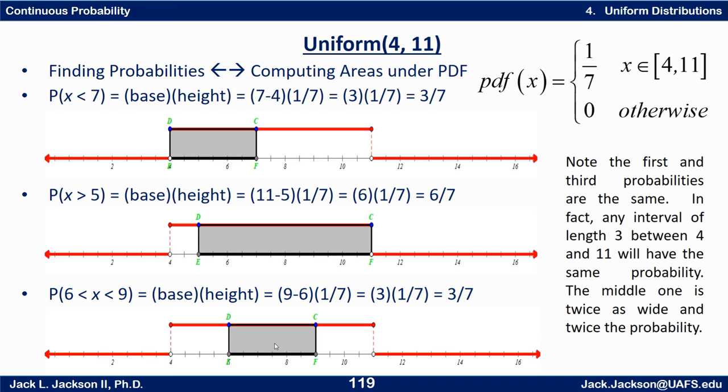Notice that the first and last ones, the rectangles are exactly the same size. Because, well, first of all, all the rectangles have the same height, one-seventh in this case. It's a uniform height, and it hits the name uniform distribution. But also, any interval here of length 3 is going to end up having the same area or the same probability.